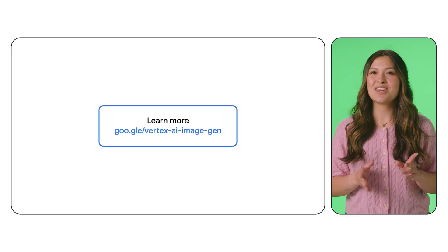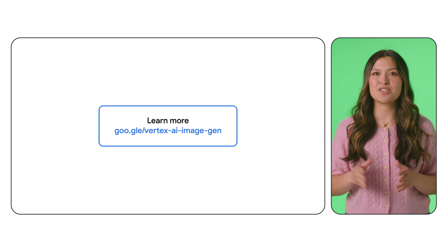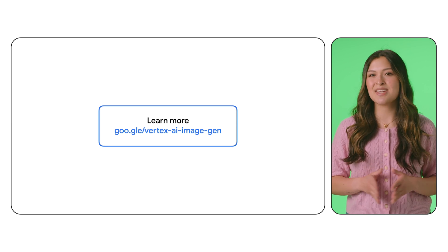This has been a brief overview of some of the advancements in Imagine 3. All of these examples we have seen today have been generated in Vertex AI Studio. However, you can also integrate Imagine directly into your applications with an API. We're excited about all of the possibilities with this model and look forward to supporting your creative process along the way. Thanks for watching and let us know how you'll use Imagine 3 in the comments below.